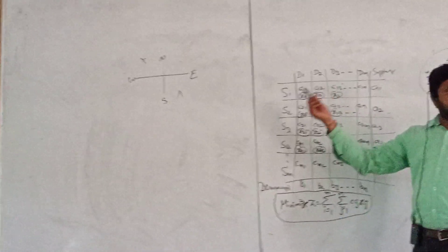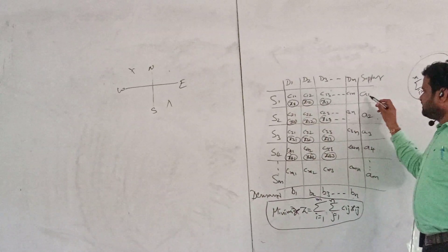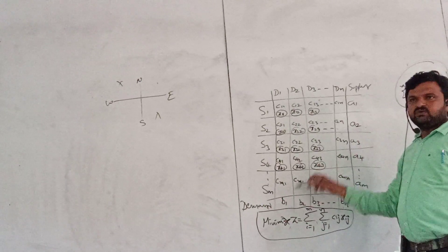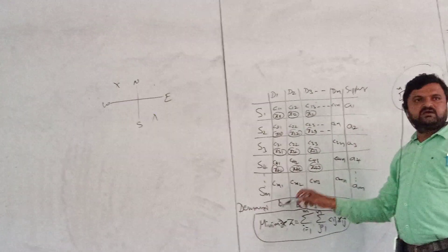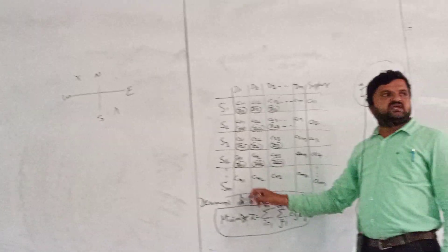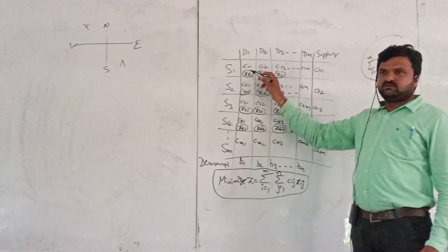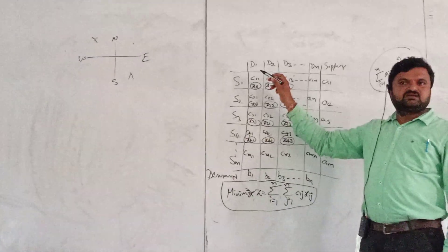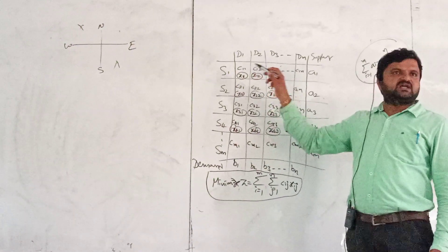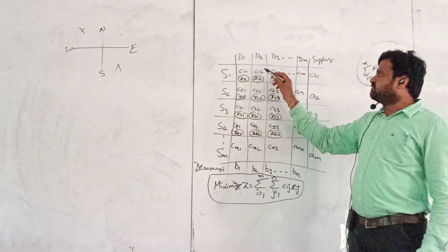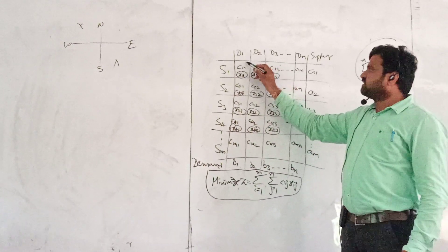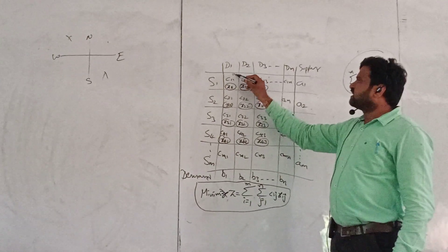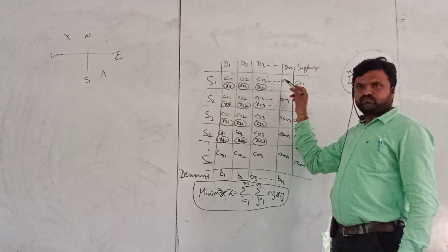How can you allocate this cell? We can take the minimum of A1 and B1. We can allocate min(A1, B1). Suppose the minimum of A1 and B1 is A1 — minimum means the least value. Suppose you allocate A1 here, so we can cross out this row.